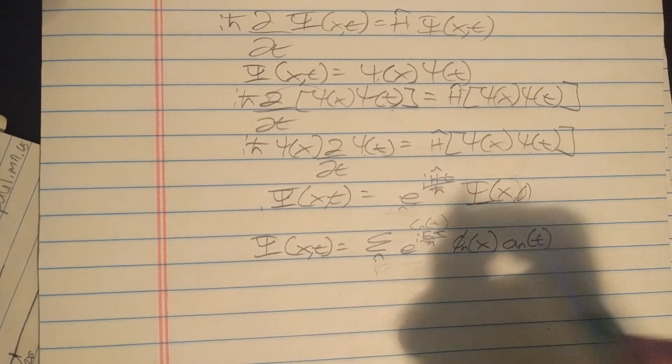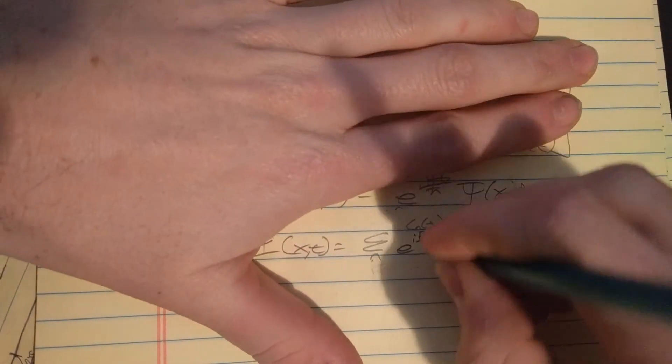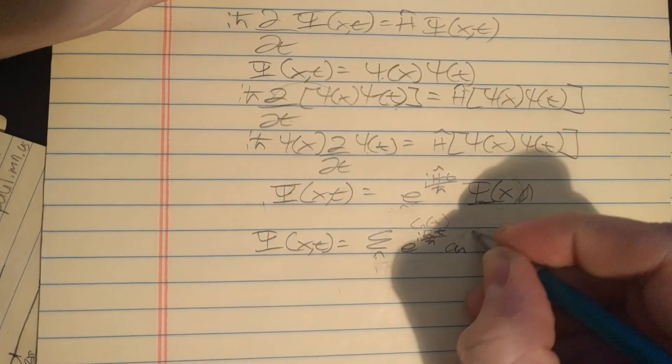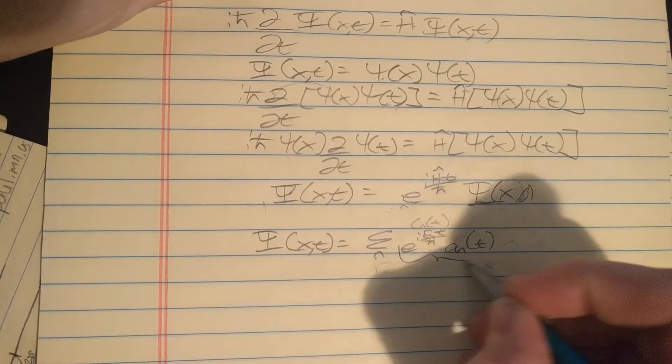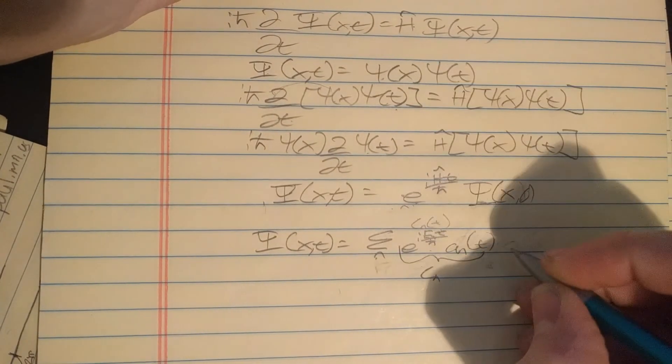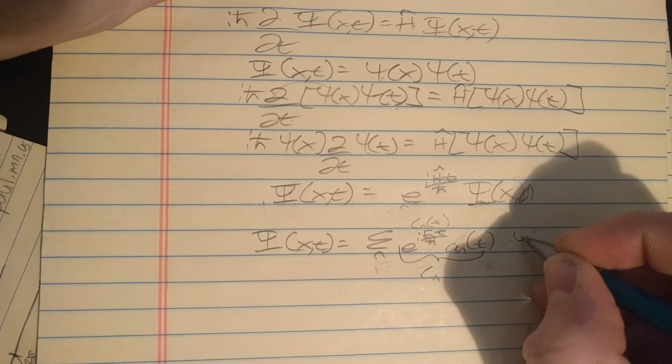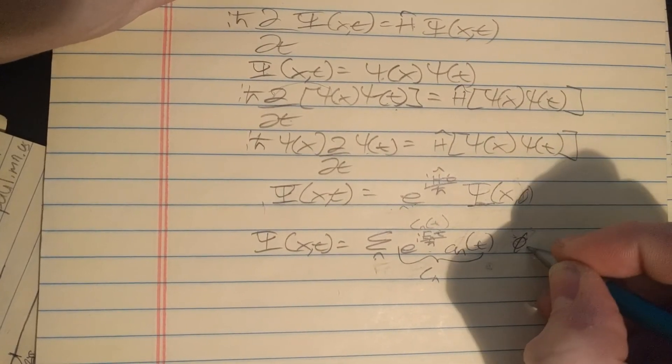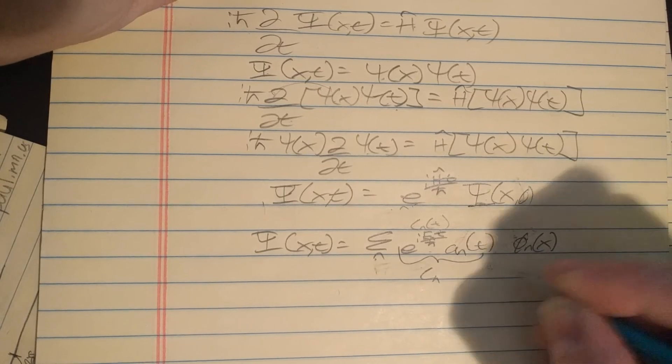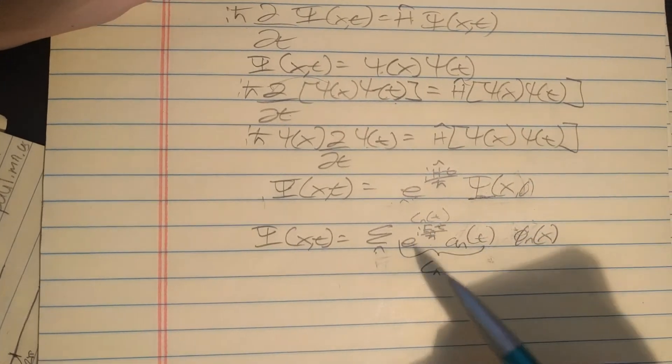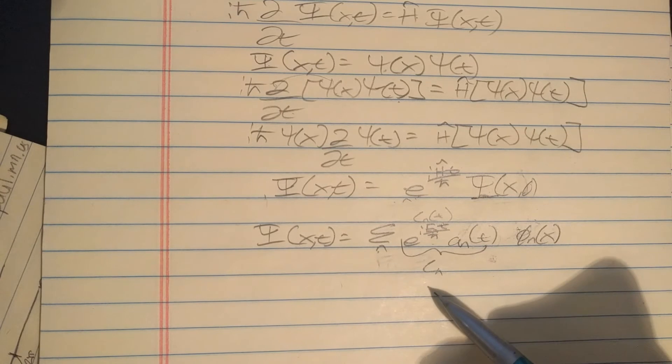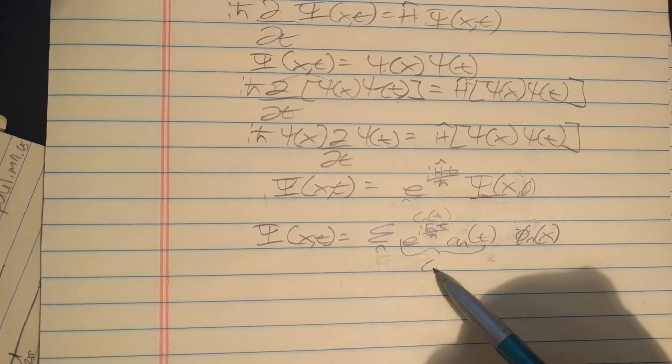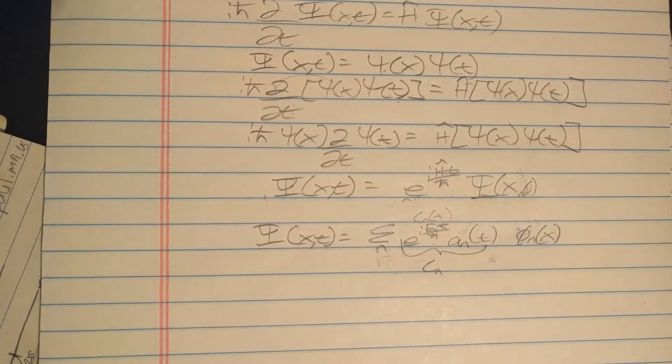And we got phi sub n - this part only depends on space. And we still do have a coefficient, let's call it a sub n that depends on time. So our c sub n turned into this part - this used to be our c sub n on the previous page - and then this was our eigenstate that depends only on space.